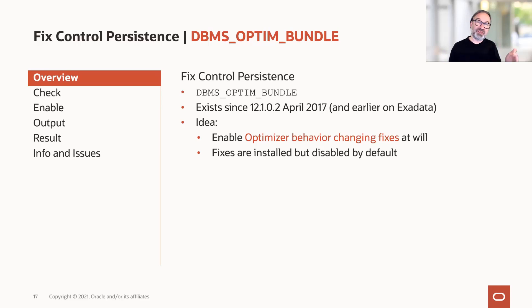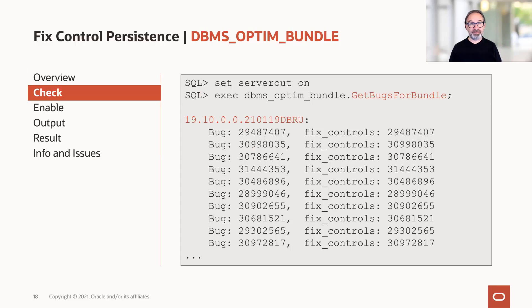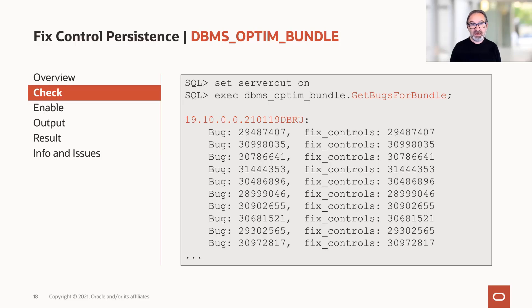There were a few cases where it disappeared and then reappeared again. How do you use it, and why do you want to use it? We roll out a lot of patches. Here's an example with 19.10: set serveroutput on — this is important because otherwise you don't see any output — and then exec DBMS_OPTIM_BUNDLE.GET_BUGS_FOR_BUNDLE. You get a long list of bugs for 19.10. These are all potentially behavior-changing optimizer fixes, and they have a fixed control associated with them.